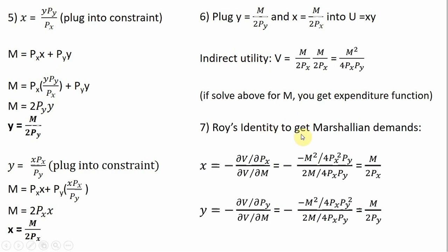Roy's identity tells us we can recover the Marshallian demands by taking the ratio of two partial derivatives of the indirect utility function. Specifically, we take the partial derivative of V with respect to the price of good X, divide by the partial derivative of V with respect to income, and place a minus sign in front. This simplifies down to the ordinary Marshallian demand for X. We do the same for good Y, using the partial derivative with respect to the price of good Y in the numerator.